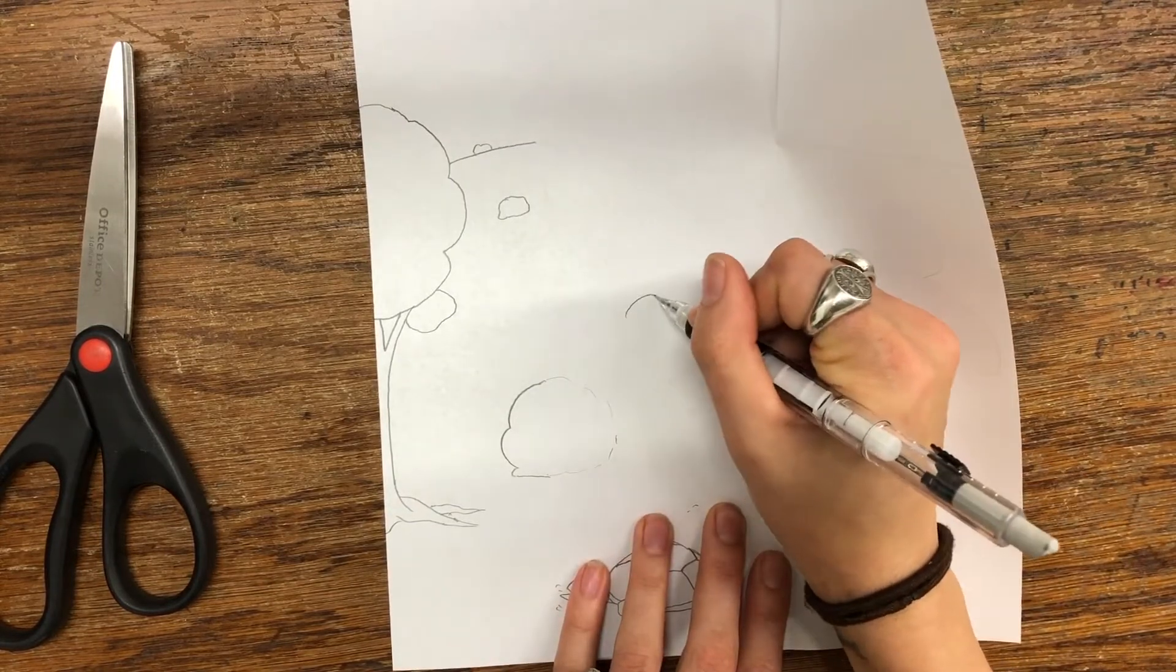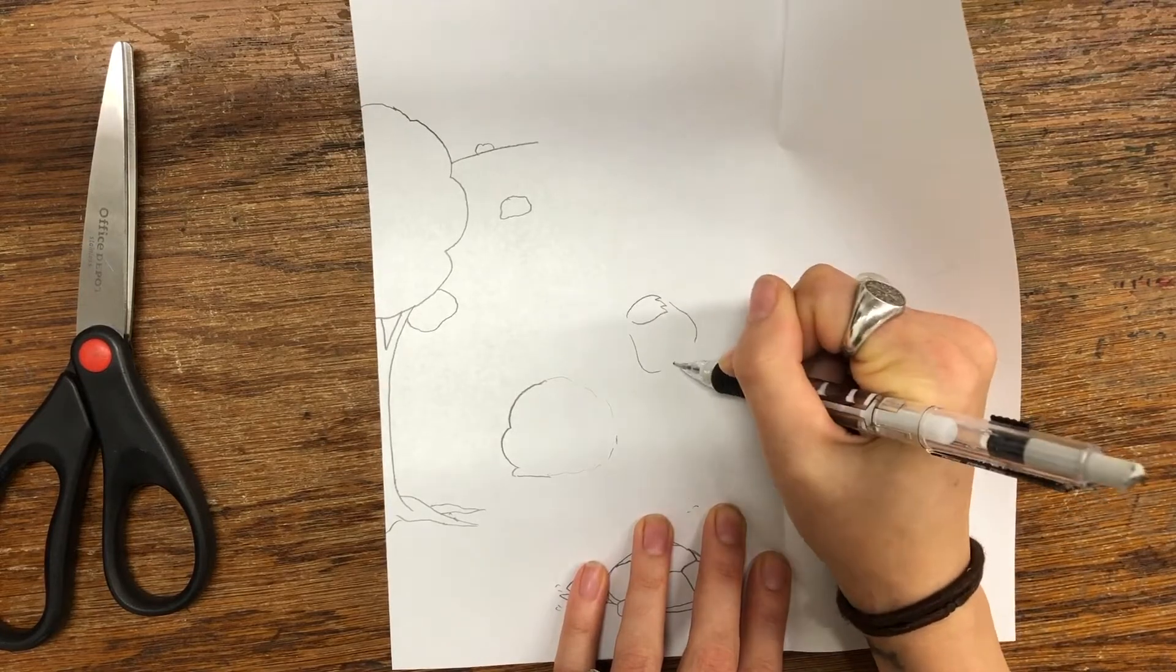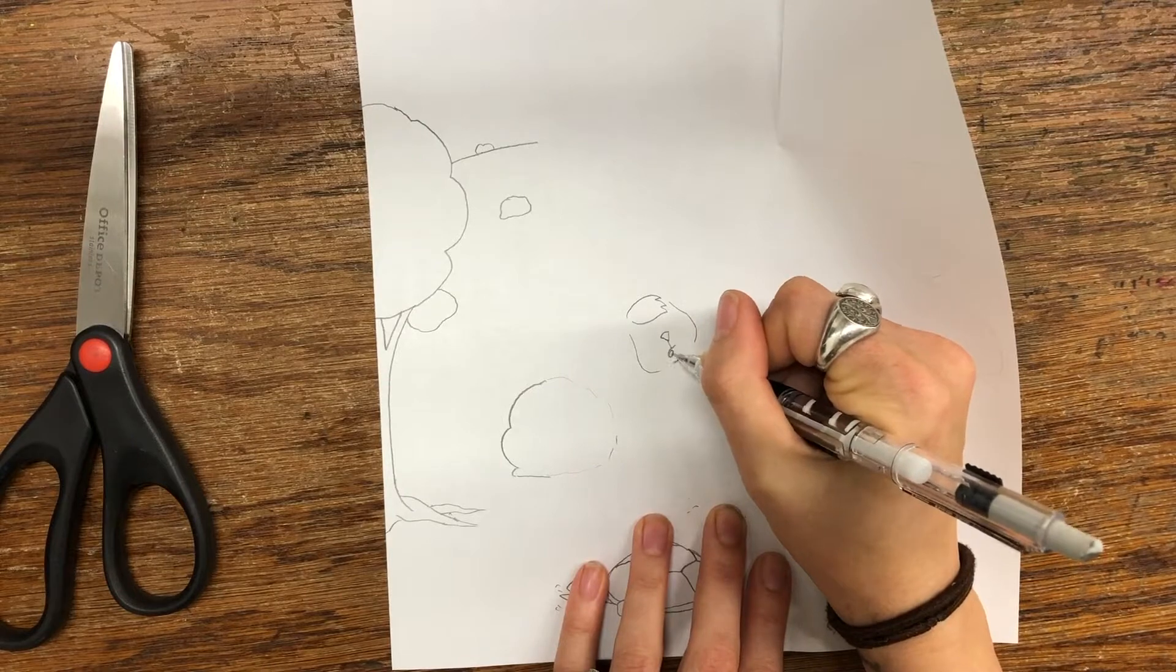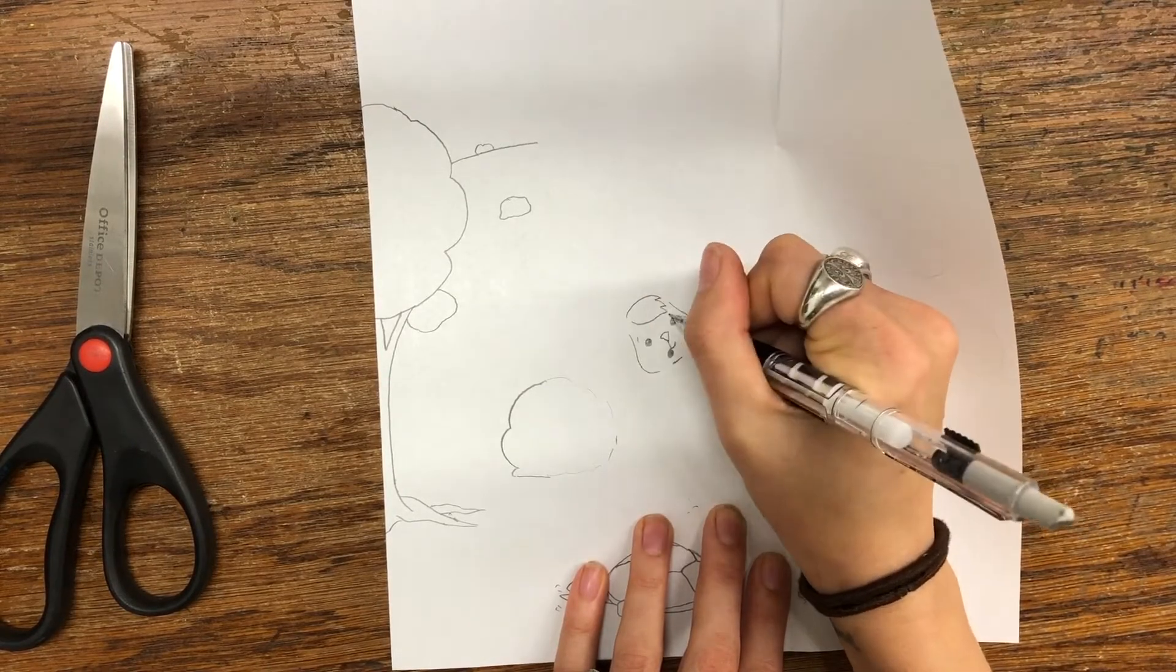For my hidden creature I decide on a rabbit because I think rabbits are cute and I want my rabbit to be doing something. So I angle his face up and I'm going to have him reaching up to grab an insect.